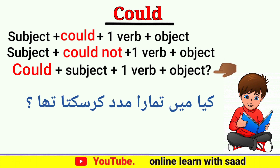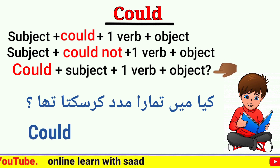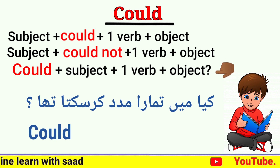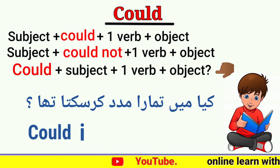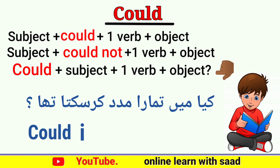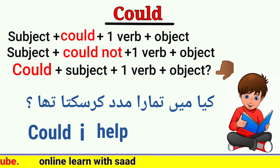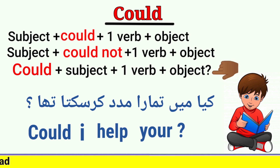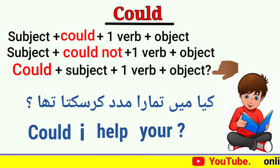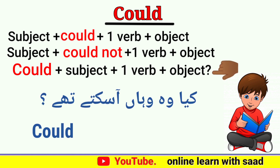'کیا میں تمہاری مدد کر سکتا تھا؟' — پہلے could، پھر subject 'میں' یعنی I، پھر verb 'مدد کرنا' یعنی help، پھر object 'تمہاری' یعنی you، آخر میں question mark — Could I help you?